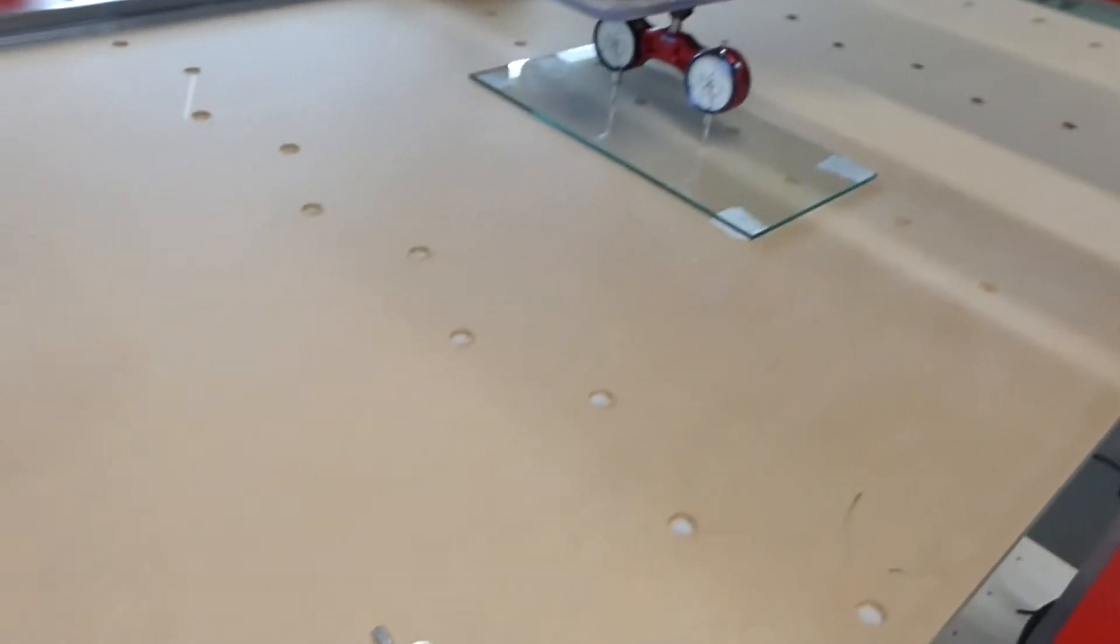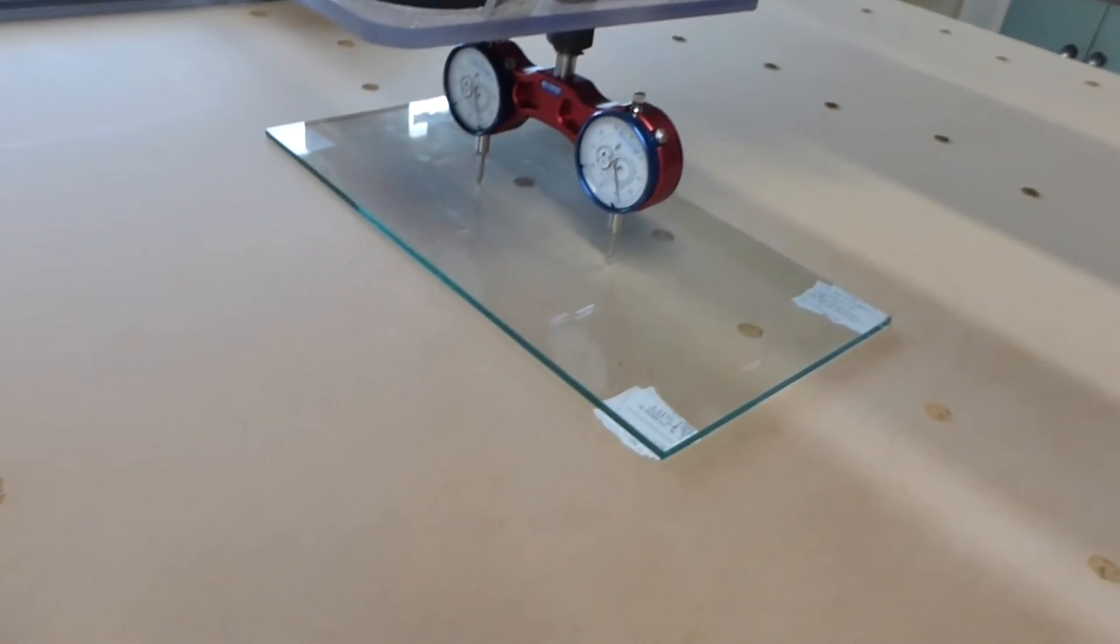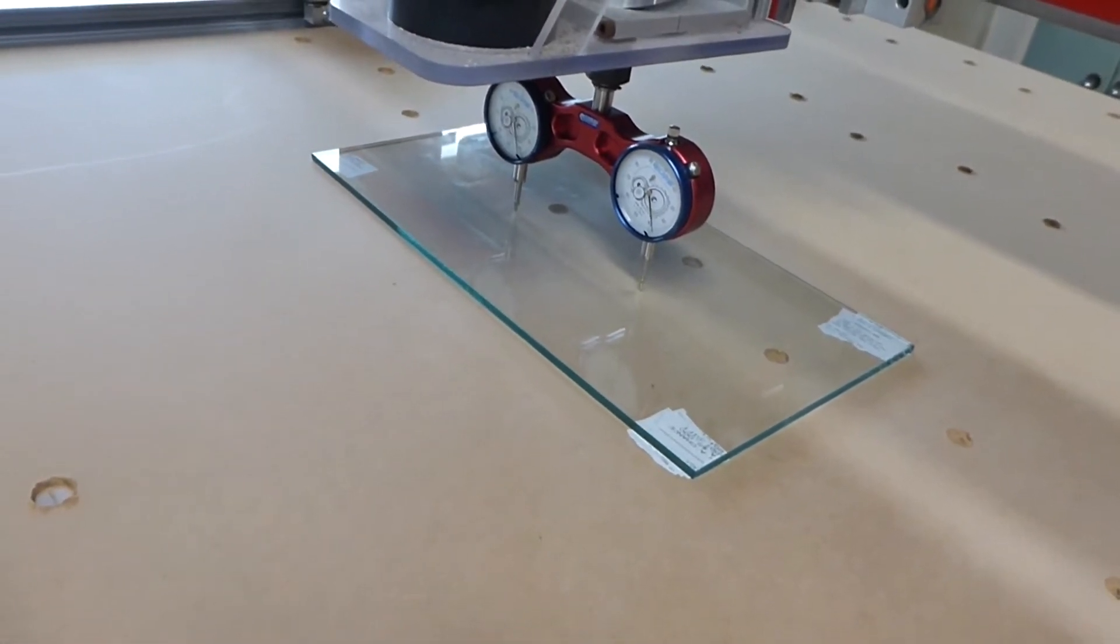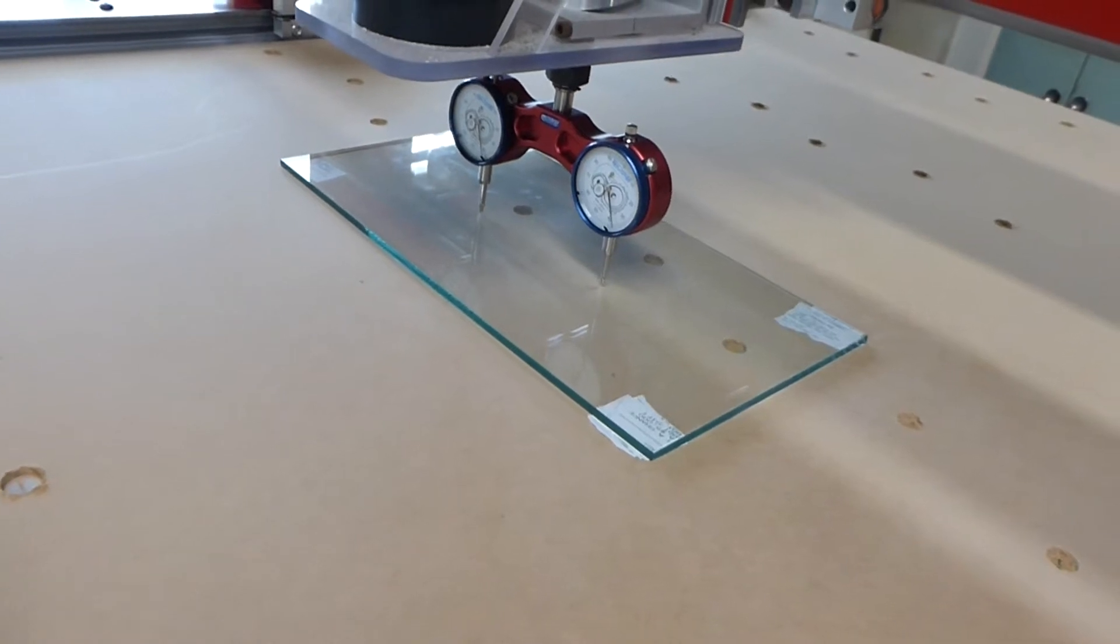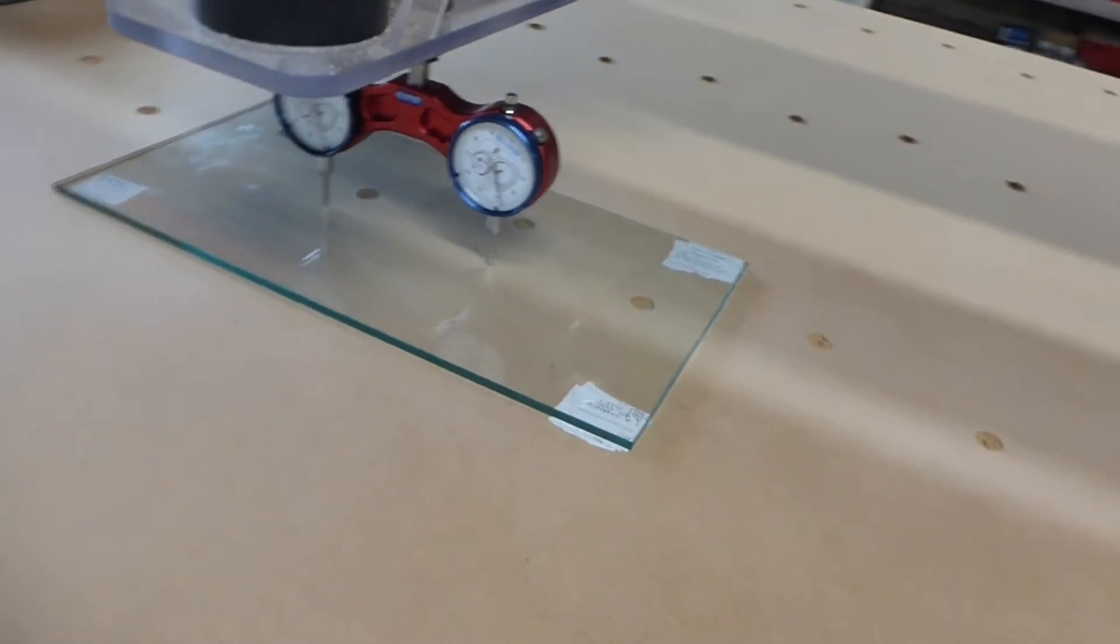The first thing I did is I went and found a piece of glass. You see the glass under there, this is just a scrap from a local glass shop, they just gave it to me. That thing is sitting level on my table. I leveled that from side to side.